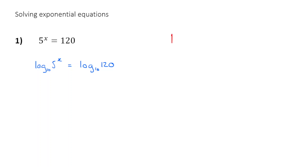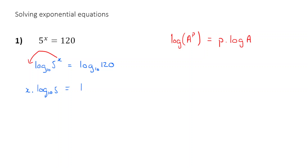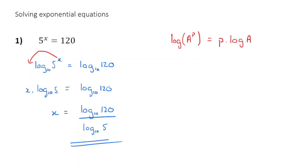For those of you who can't remember that: if we've got log of a to the power of p, then we can simplify that to p times log a. So we can apply that here because we've got x as a power and we can bring that power down. So next line, we get x times by log base 10 of 5 is equal to log base 10 of 120. And then it should be fairly simple to find x because we just divide through both sides by log 5, giving us log base 10 of 120 divided by log base 10 of 5. We can just punch that into our calculator — press log 120 divided by log 5 — and we will get our answer. I don't have my calculator on me, so I'm not going to calculate that right now, but that's the method.